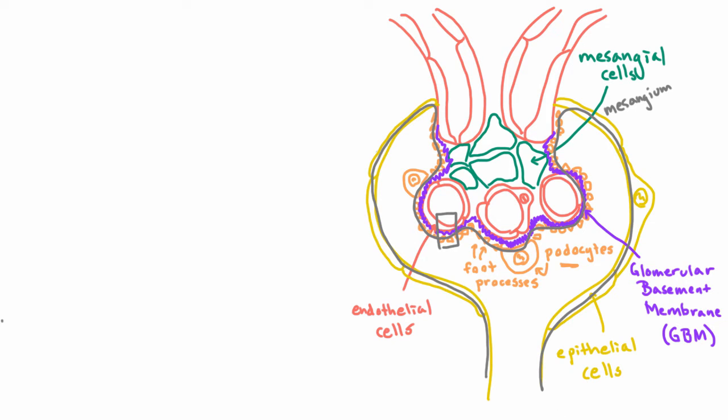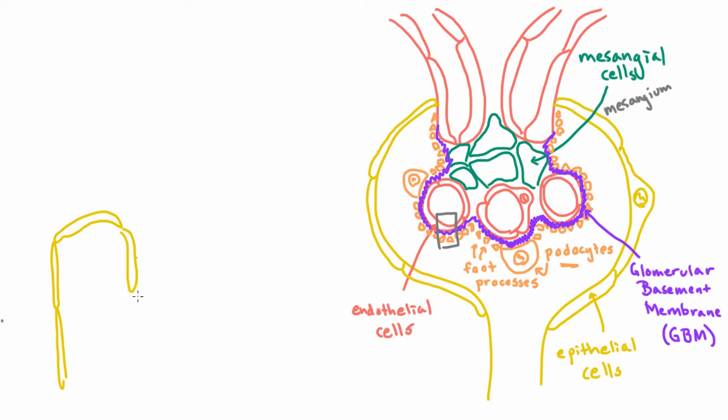And so that might actually give you a little hint as to how this whole structure was formed. So initially what you had in development was these epithelial cells just forming a blind pouch. And so this is the beginning of the nephron, and it continues down that way. And you had some capillary cells up here with the arterioles, the afferent and the efferent, and all of that held together by your mesangial cells.